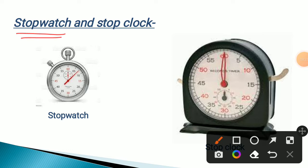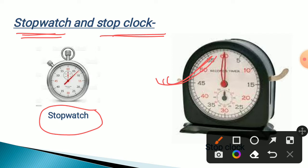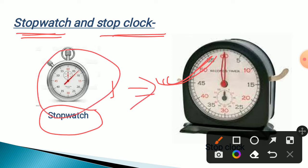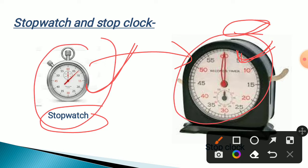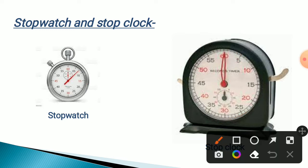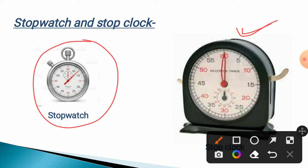Next are the stopwatch and stop clock. A stopwatch is small in size. It is used to measure short intervals of time, such as during athletic events and sports activities. A stop clock is similar but larger. Stop clocks are generally used in schools, colleges, libraries, and laboratories. The minor difference between a stopwatch and a stop clock is mainly their size.